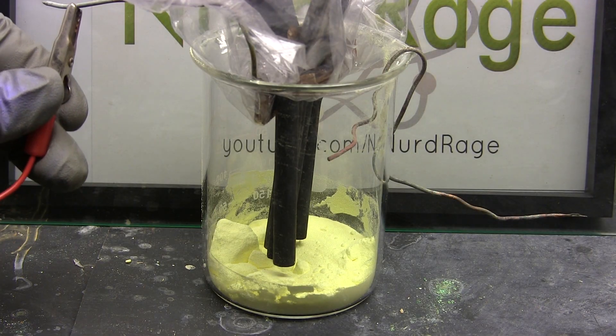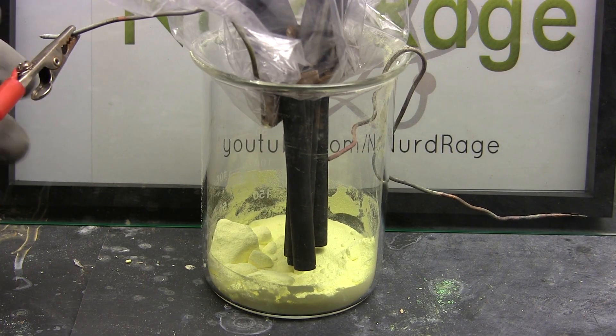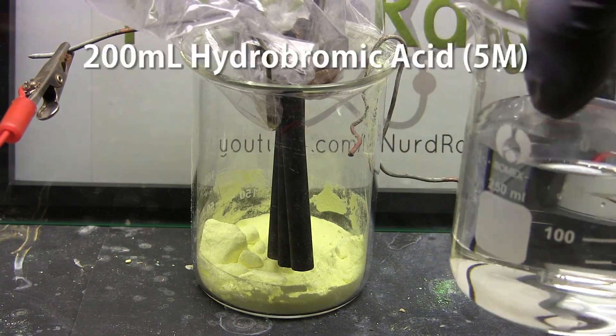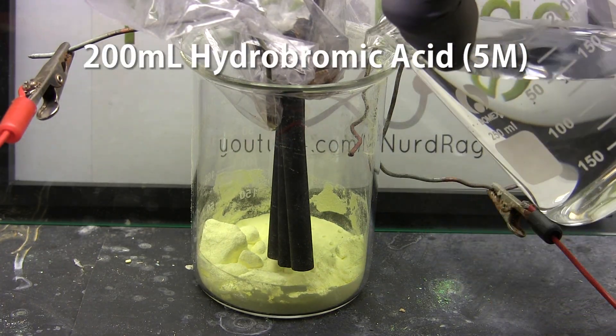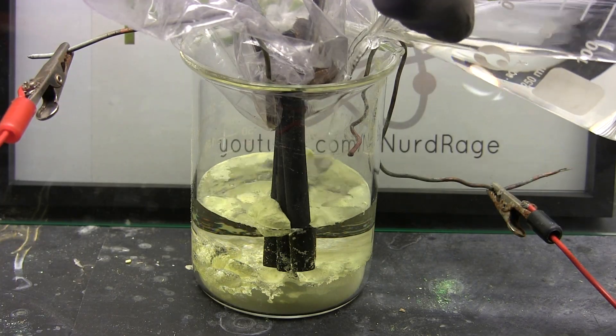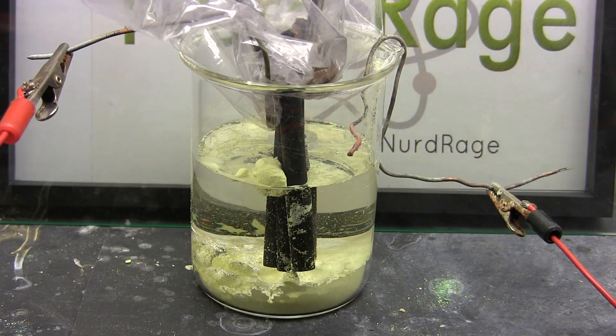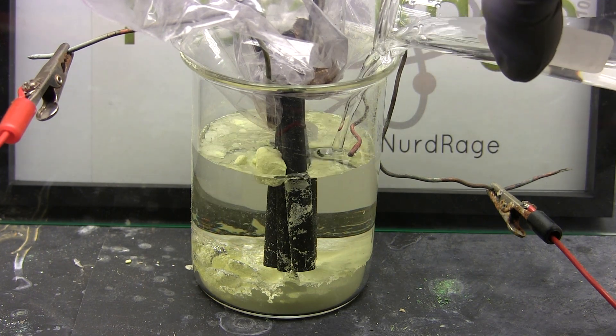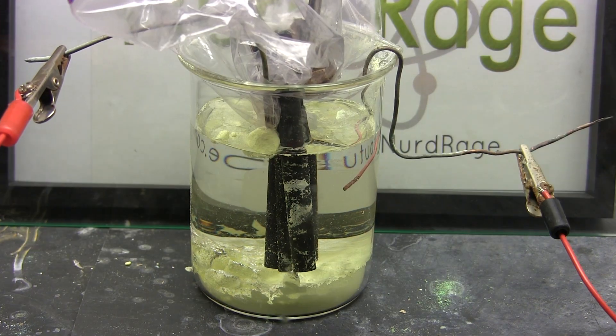Now we clip on the power leads. Positive for the anode and negative for the cathode. Now we add the electrolyte which is 200 milliliters of a 5 molar solution of hydrobromic acid. Make sure the carbon electrodes are submerged to at least 5 centimeters depth and that the copper electrode is under the surface of the electrolyte.